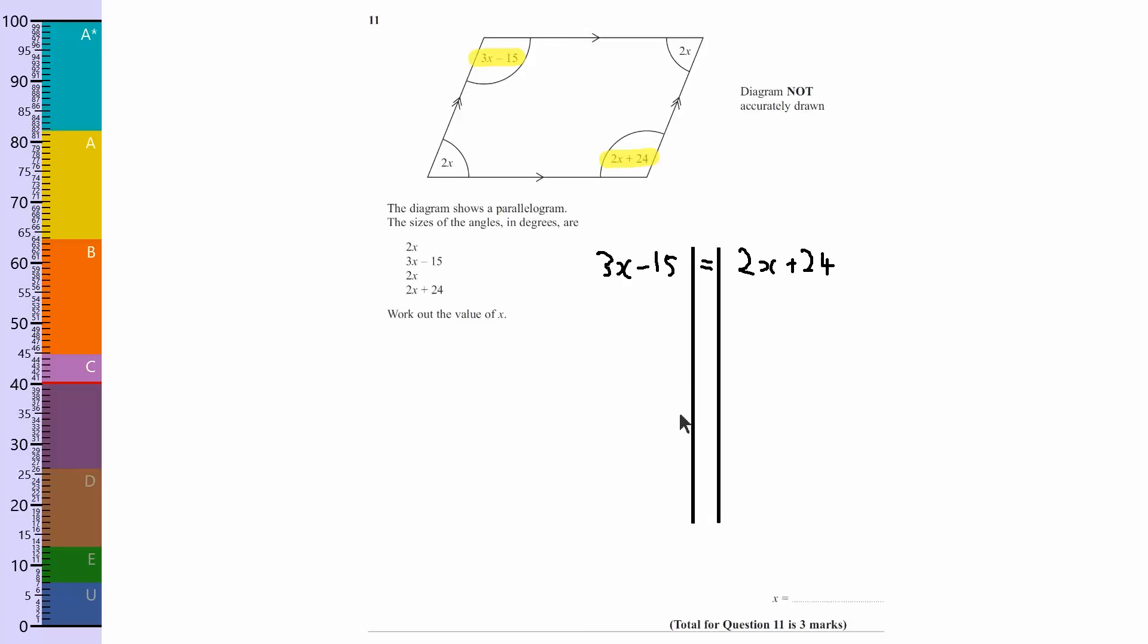Now with these ones, what we want to be doing is getting the x's on one side and the numbers on the other side. What you should always do is have a look and see which side has the smallest number of x's. Looking at this, it's 3x on this side and it's only 2x on this side. So I want to get rid of the x's from this side.